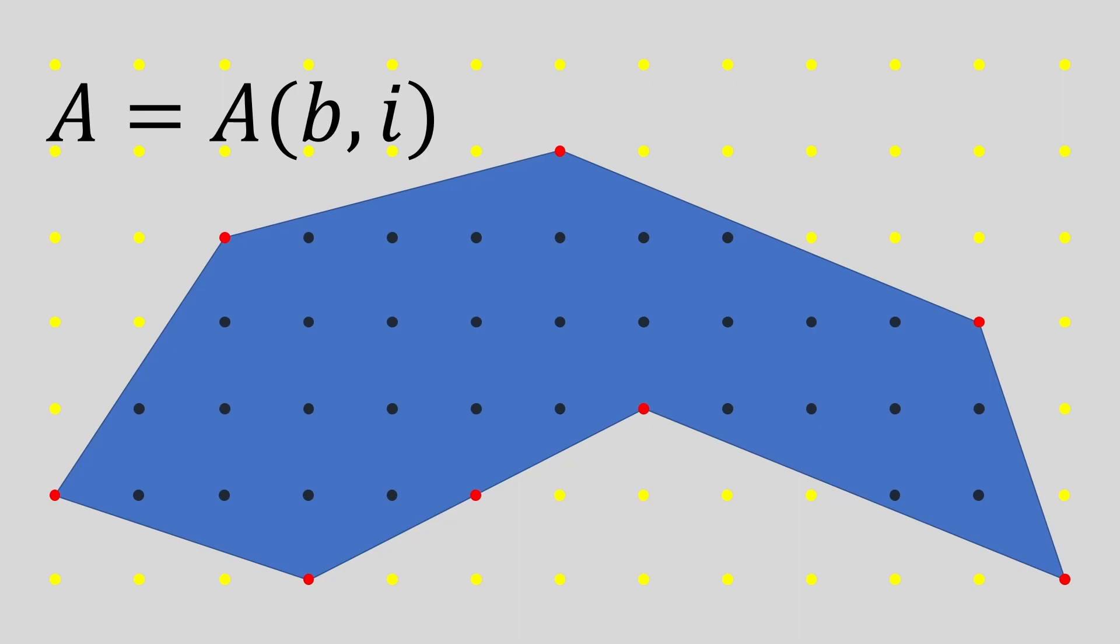Returning to our original polygon, I've colored the boundary points in red and the interior points in black. Notice that the red boundary points include two types. The six vertices which by definition must lie on a lattice point, as well as the one lattice point that happens to be on the side of the polygon.